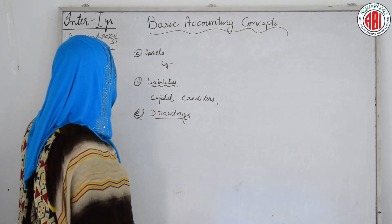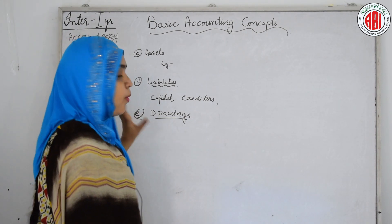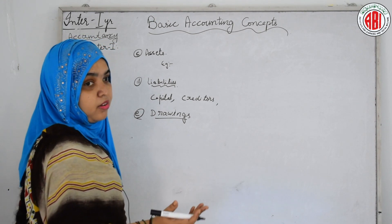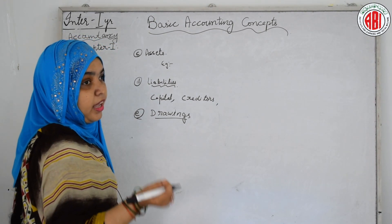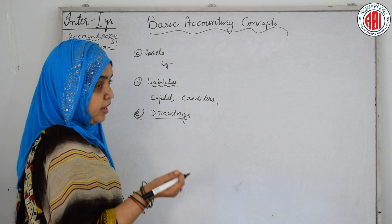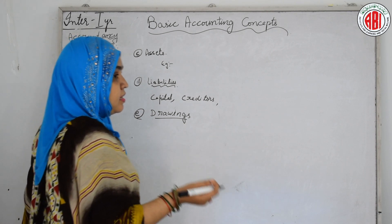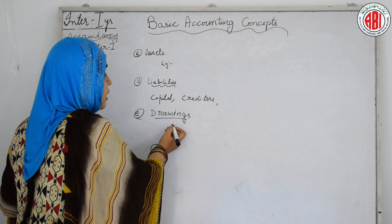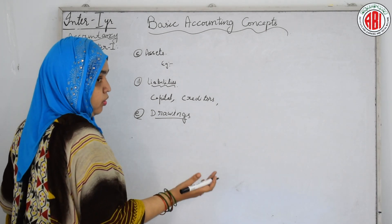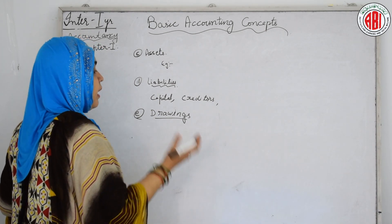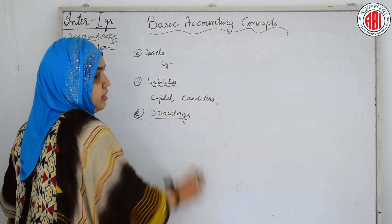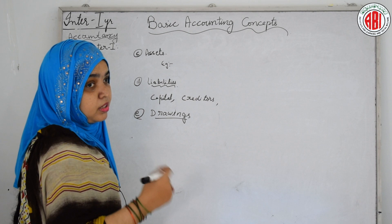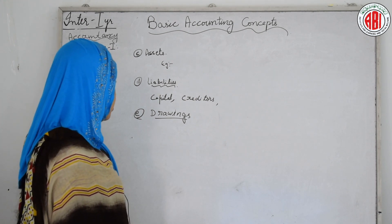Our next basic accounting concept is drawings. Drawings are the withdrawals by the proprietor. If a proprietor needs money — suppose for his son's education or daughter's marriage — he is authorized to take or withdraw some of the capital he has invested in the business. Sometimes he may also introduce new capital.